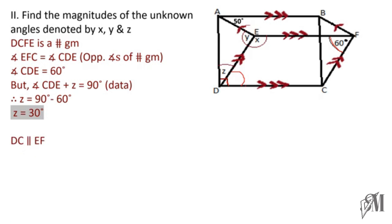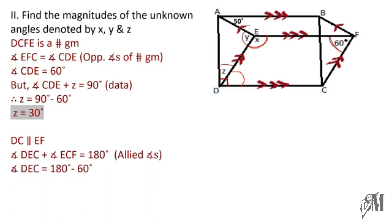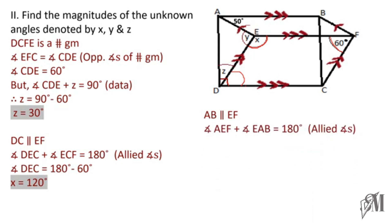DC is parallel to EF as marked in the diagram. Since they are parallel, angle x and the 60 degrees are allied angles, so x equals 180 minus 60, which is 120 degrees. When we come to the next part, AB is parallel to EF, therefore angle AEF and angle EAB are allied angles summing to 180 degrees. So angle AEF is 130 degrees.